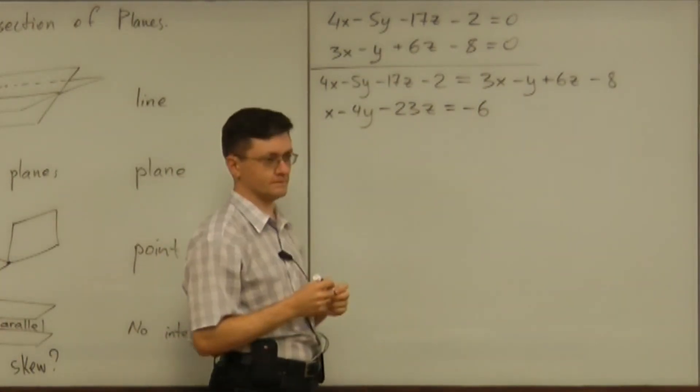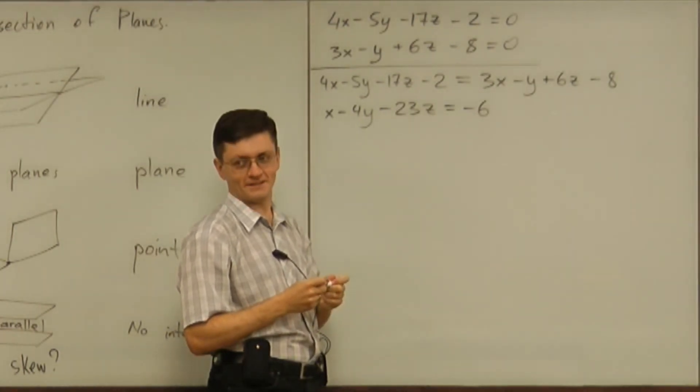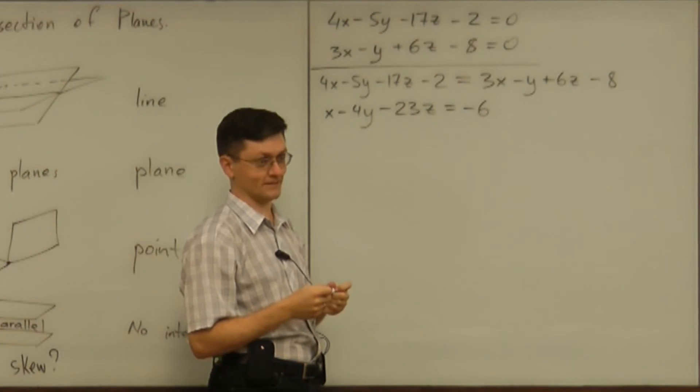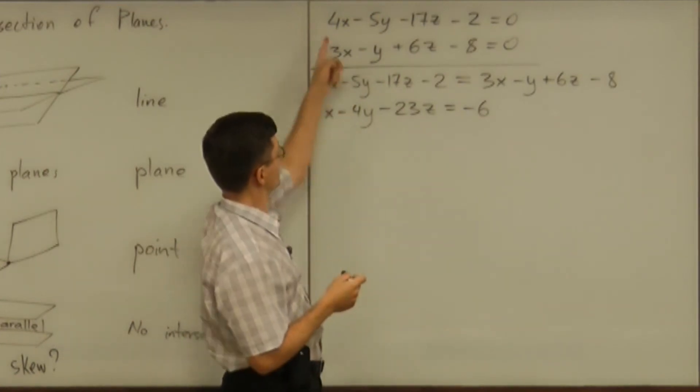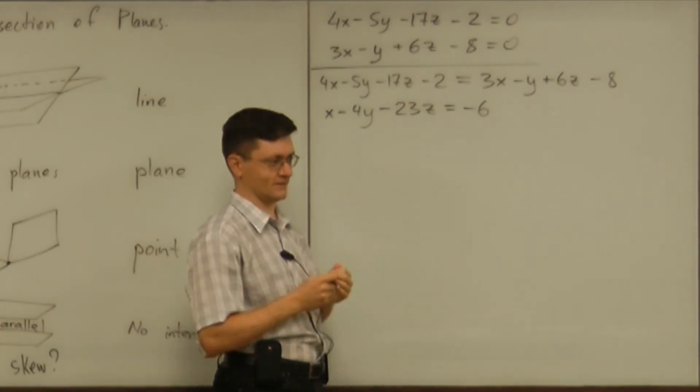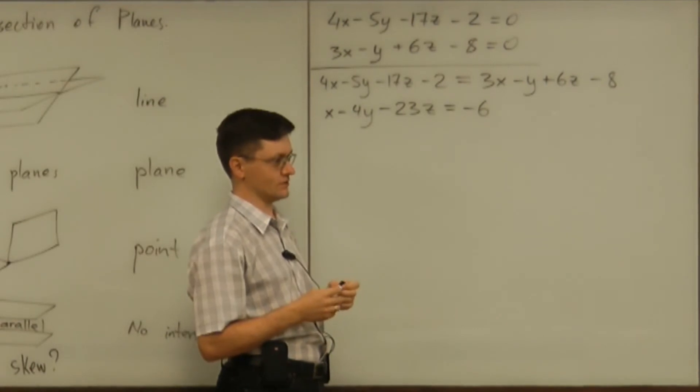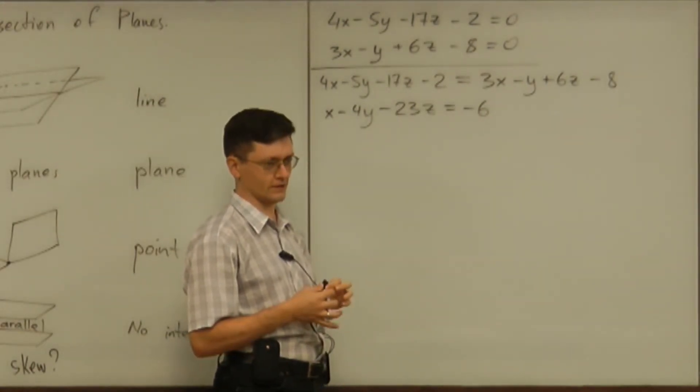So what do you get? What is that? A plane. A plane. So two planes intersect in a plane. What does that mean, geometrically? How can two planes intersect in a plane?